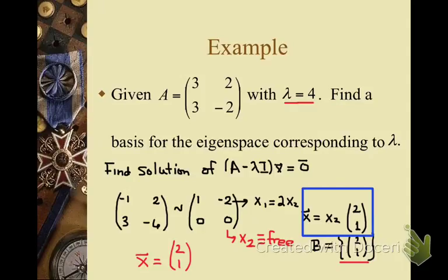You can check your answer by showing that A times x equals lambda times x, which is 4 times x. For the reading assignment: question 1 is to write down the definition of eigenvector and eigenvalue, and question 2 is to show that A times x for this example equals 4 times x.